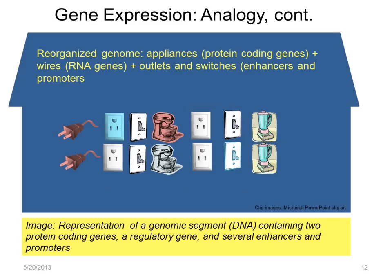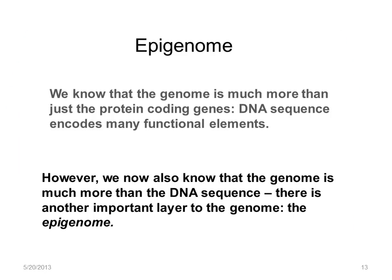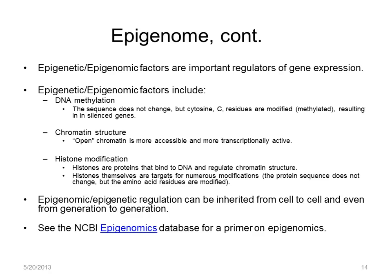But we're not quite finished. We've addressed the first statement, but we also know that the genome is more than just the DNA sequence. There is another layer to the genome called the epigenome. Let's look at some epigenomic, also called epigenetic, factors. The first is DNA methylation, where the sequence itself does not change, but cytosine residues, primarily, are chemically modified by enzymes that add a methyl group. This usually turns off or silences the gene, meaning that it cannot be expressed.